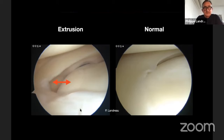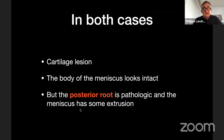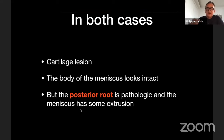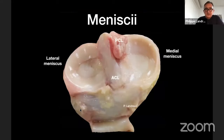In both cases, we see cartilage lesion. The body of the meniscus looks intact — traditionally the problem is after total meniscectomy — but here the body itself looks intact while the posterior root is pathologic and the meniscus is extruded. In other words, the meniscus is no longer correctly placed between the condyle and the tibial plateau.